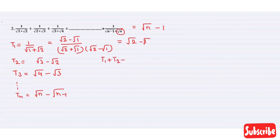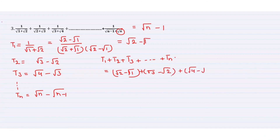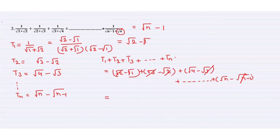So the sum equals (√2 − √1) + (√3 − √2) + (√4 − √3) + ... + (√n − √(n−1)). This is a telescoping sum — all intermediate terms cancel out. We are left with √n − √1, which equals √n − 1. This is the sum of n terms.